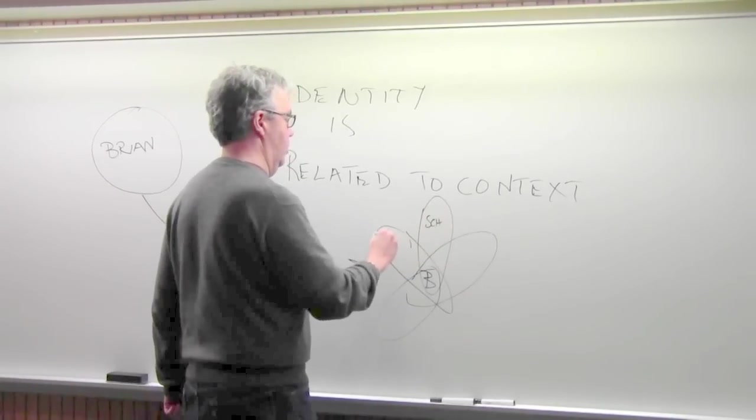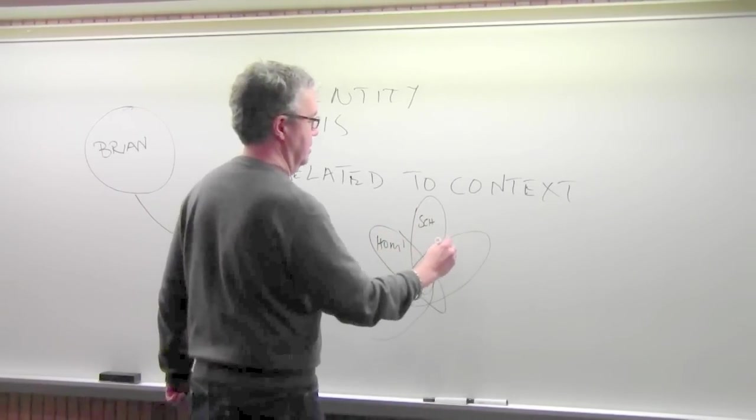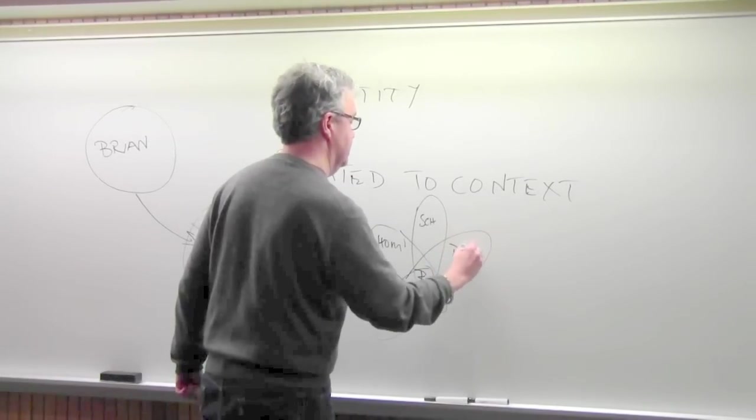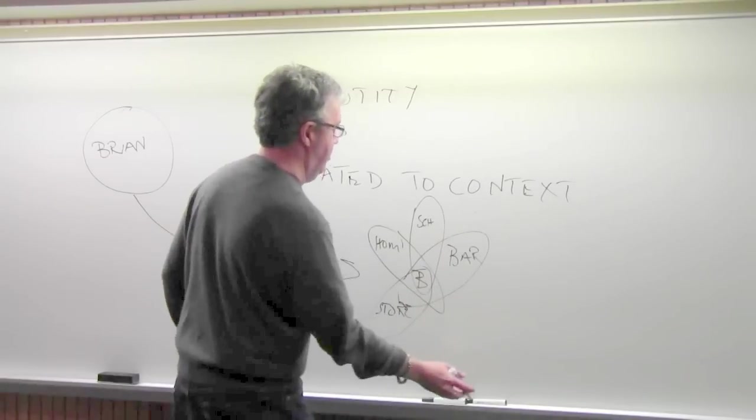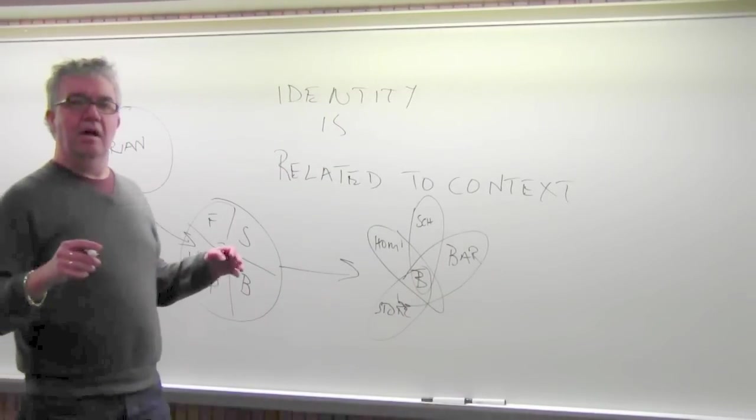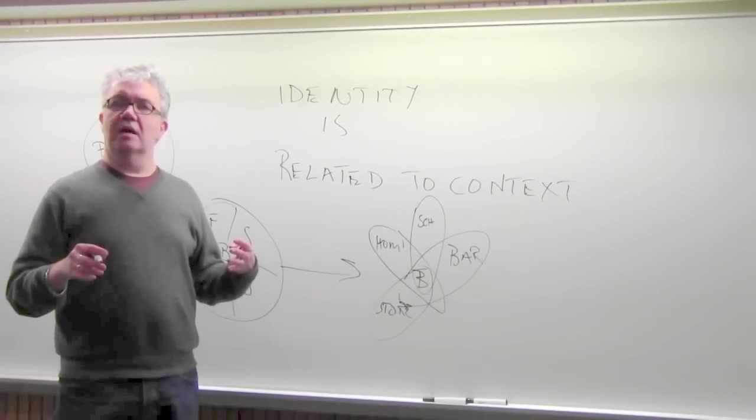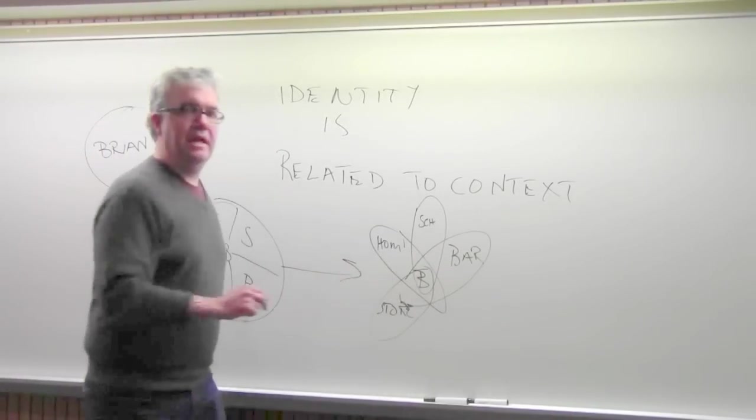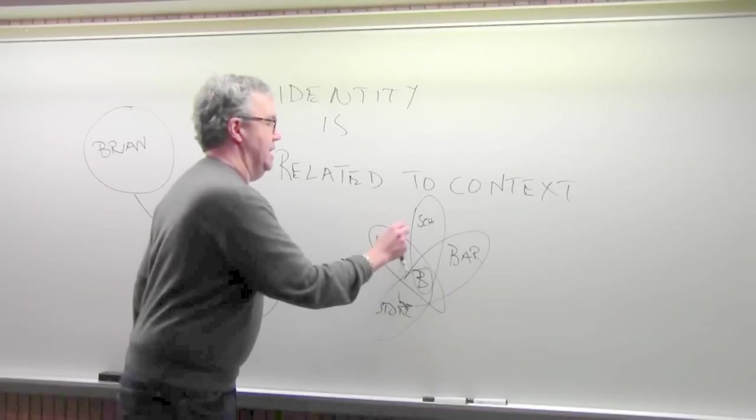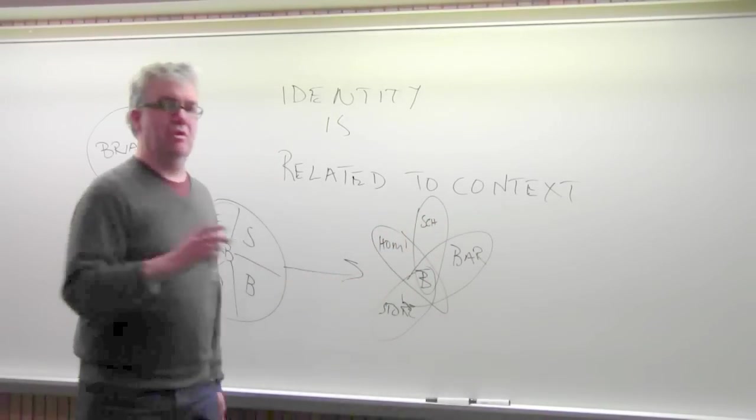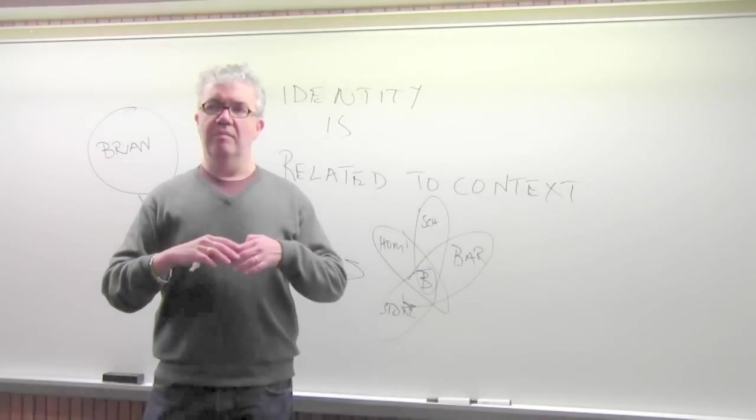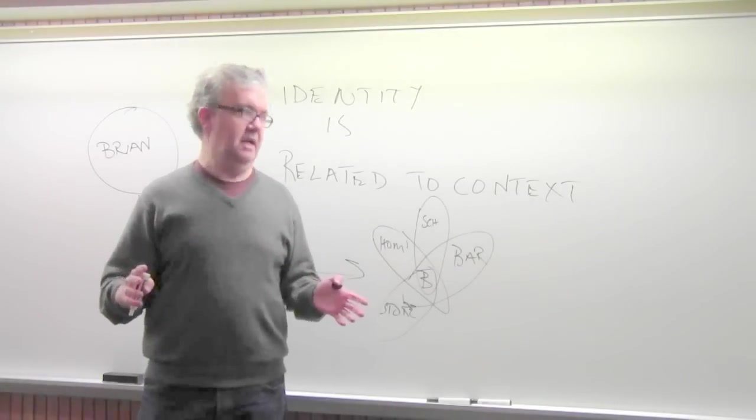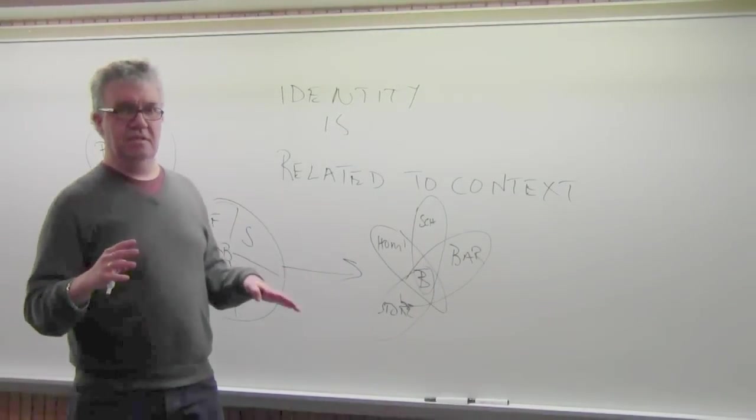there's home, there's, I don't know, a bar, for instance. There's a store. And so no matter what, where I am, there still retains a certain Brian-ness, but my identity is very fluid and changes. So I'm not really, we're not really one identity. We're made up of a multitude of identities tied to context.